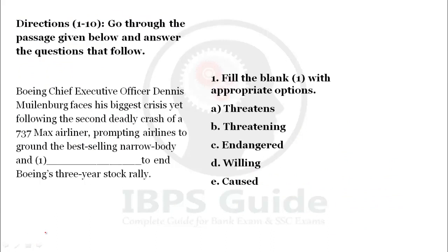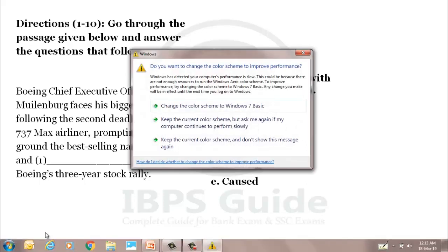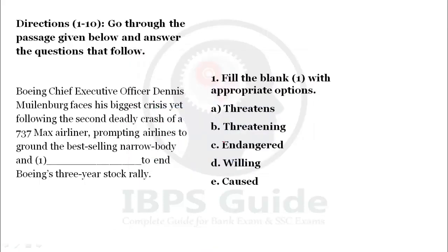The direction here is: questions 1 to 10 — go through the passage given below and answer the questions that follow. So we get one comprehension with 10 different questions. Remember, these are not mandatory MCQ type only — they can be vocabulary, appropriate word, fill in the blanks, spotting errors, or whatever format. We go through the paragraph and then give the answers.